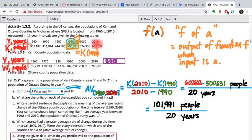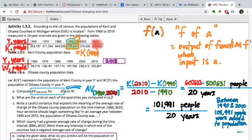Let me slow down and explain what each of those numbers means. The numerator is 101,991. What is that number actually telling us? It's the difference in the population between those two years. Between 1990 and 2010, 101,991 people did what? Maybe they were born, maybe they moved in. The population of Kent County went up. So 101,991 people were added to the Kent County population.